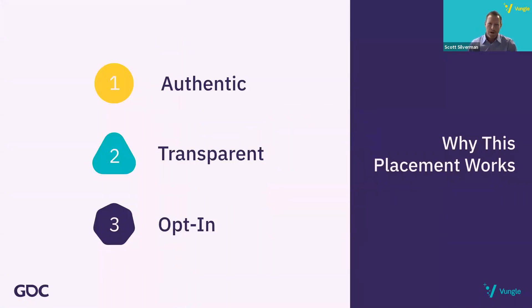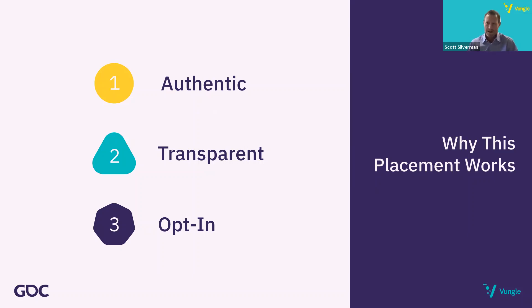So why does this work? We can boil it down to three primary reasons. One, it's authentic — the mailbox mechanic perfectly suits the virtual world of The Sims. The same way people make a habit of checking their home's mailbox every day, players in The Sims do the same thing, checking their virtual world's mailbox. Two, it's transparent — this placement clearly and visually shows the types of currencies and items a player would receive in return for engaging with an ad. Lastly, it's opt-in. The mailbox placement works because it's a completely optional experience for the player.